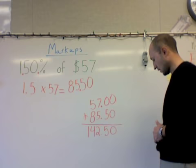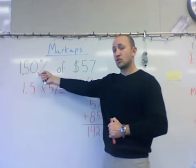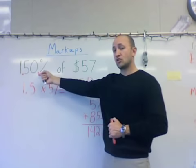So now we have found our markup price. If we think of this in real-world terms, let's say that a store buys an item for $57 from the company that makes it, and then in order to make some profit, they mark it up by 150%. What that means for us — unfortunately the consumer — is that we're going to end up paying a price of $142.50 for that item.